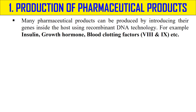The first application is the production of pharmaceutical products. We can make pharmaceutical products inside a host if we transfer the genes for that product. If the gene of a particular product is isolated and incorporated into an expression vector — the vector which allows your gene to express and make the protein of interest — and this recombinant DNA molecule is transferred into host cells, the host cell will produce that protein, which we can then purify. Examples include insulin, growth hormone, and blood clotting factors.